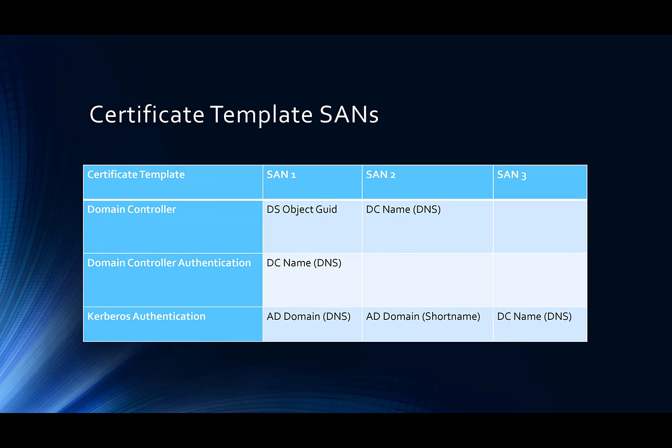There are also the names that are supplied in certificates. I'm not actually looking at the subject name here, because I'm not really concerned about that — this is focusing on LDAPS. So the domain controller template will put in the SAN a directory service object GUID, and the DNS name of the domain controller in the SAN.